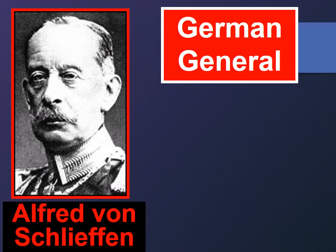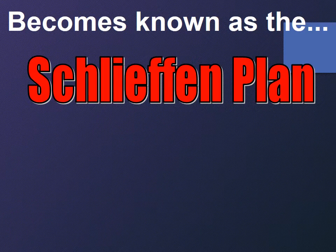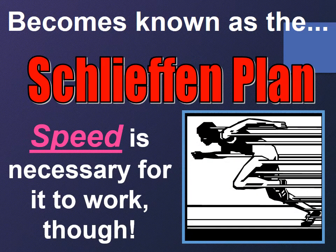So German General Alfred von Schlieffen said let's quickly attack France before Russia mobilizes. This becomes known as the Schlieffen Plan. He believed speed is necessary for it to work, so they had to get to it as soon as possible.